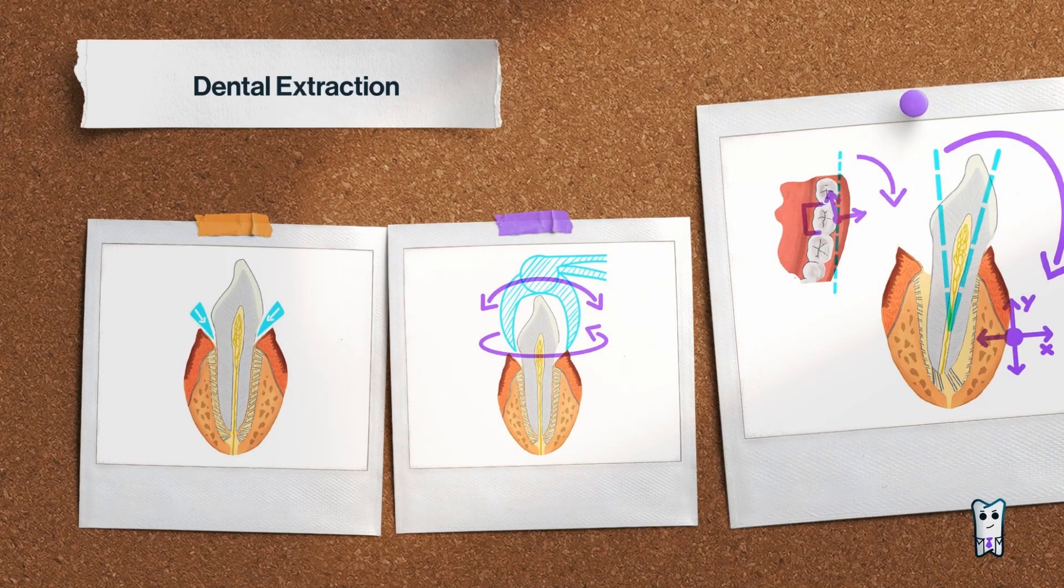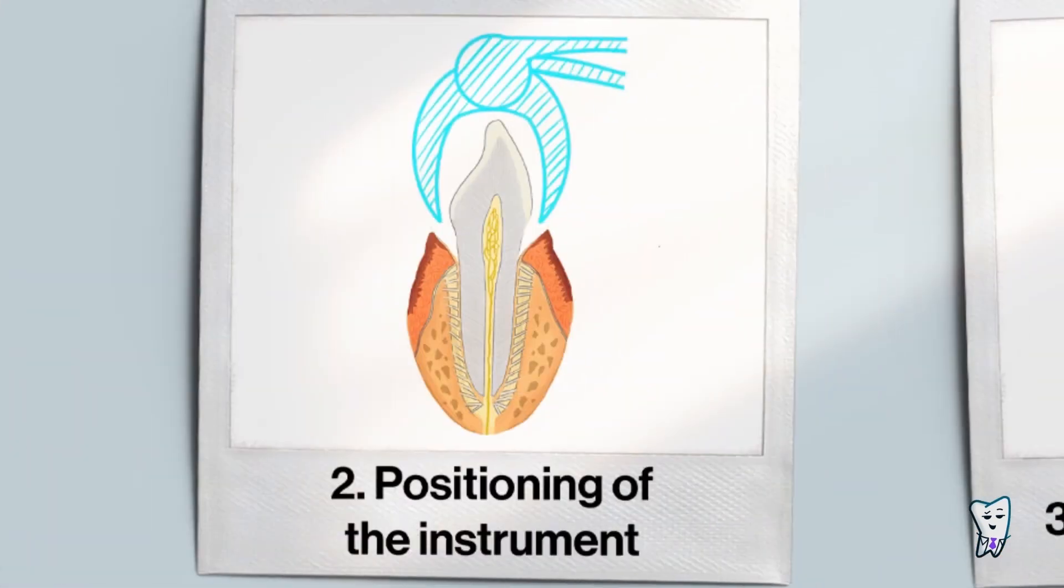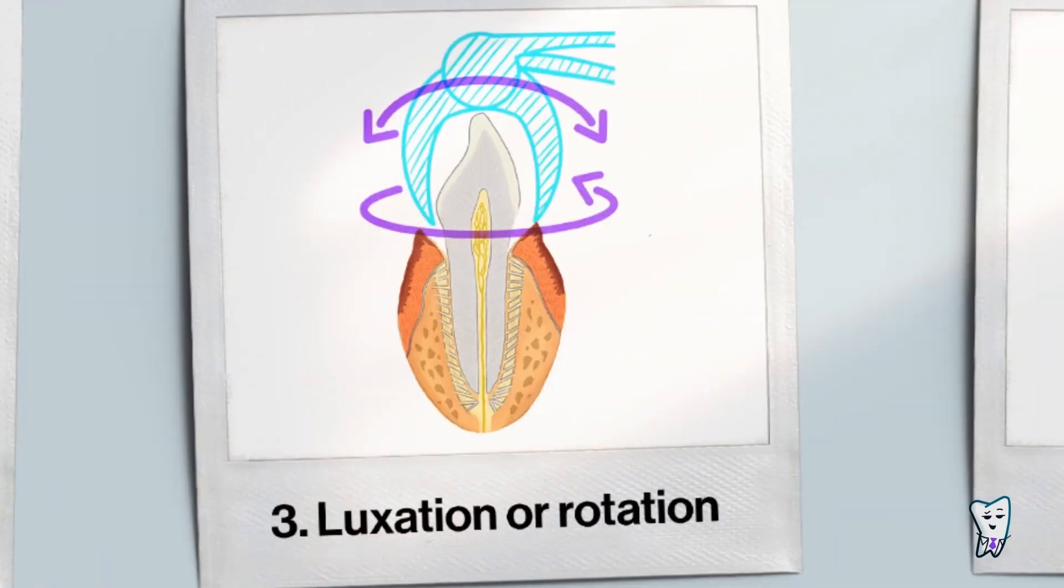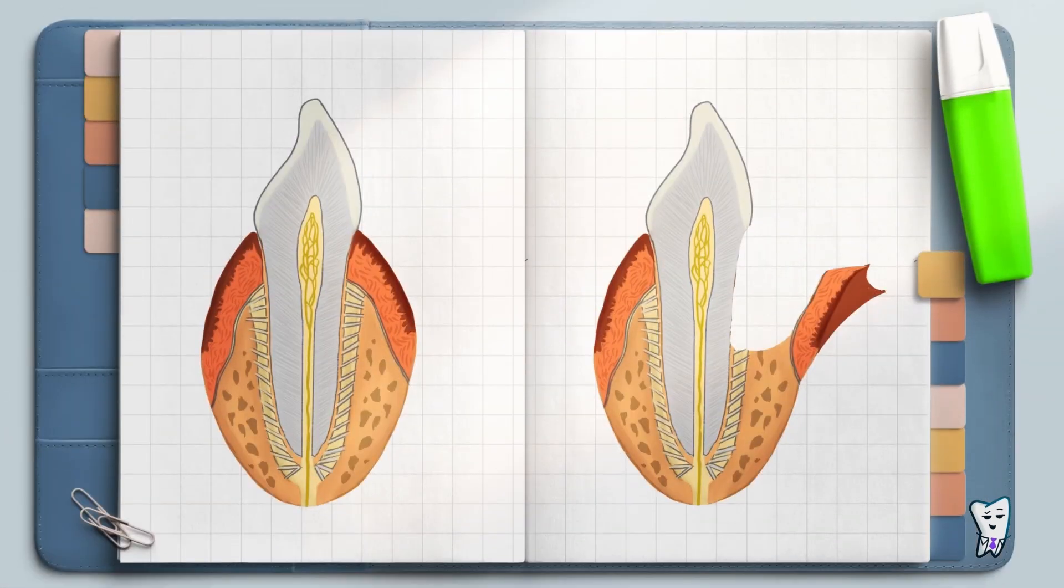It involves four steps: syndesmotomy, positioning of the instrument, luxation or rotation, and traction. Dental extractions can be broadly categorized into two primary types: closed or routine extraction and open or surgical extraction.